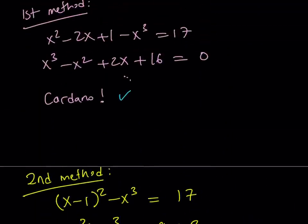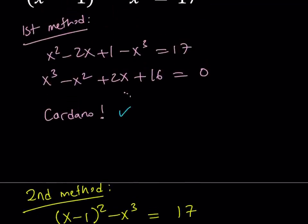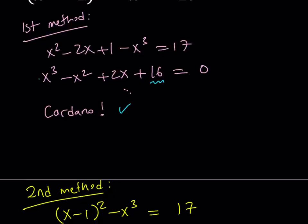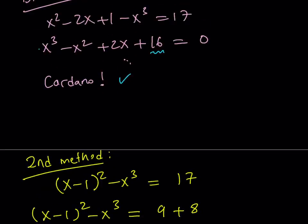So if you go back to the first method, of course not the Cardano, but if you want to use Cardano, like I said, be my guest. But if you look at this cubic, you might end up finding a factor of 16 that works because this is monic. So you don't have to worry about the coefficient of x cubed, which is nice, which makes applying the rational root theorem a little easier.